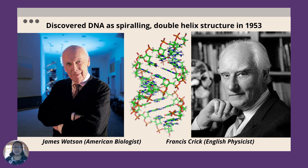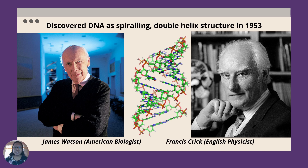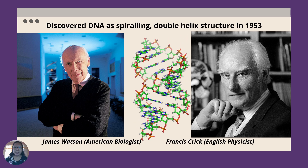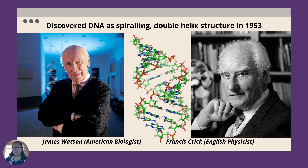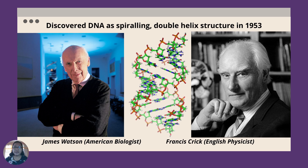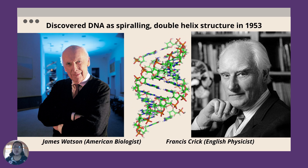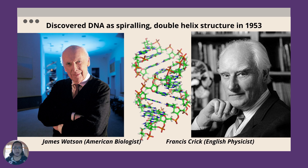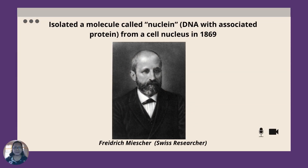The DNA was discovered by James Watson, an American biologist, and Francis Crick, an English physicist, in 1953. They discovered that DNA has a spiral double helix structure. Friedrich Miescher, a Swiss researcher, had earlier isolated a molecule called nuclein — meaning DNA with associated protein from a cell nucleus — in 1869.